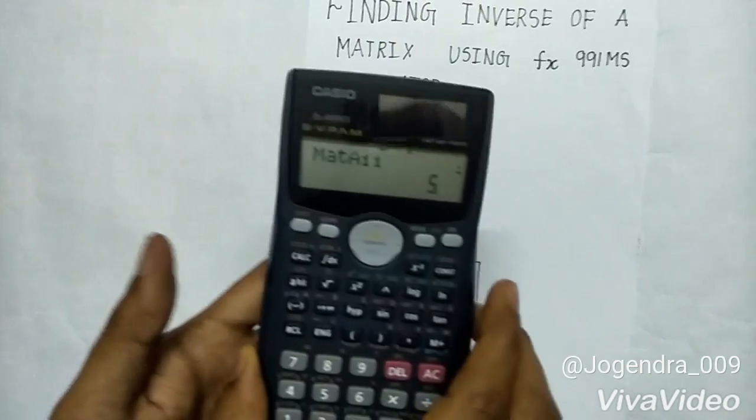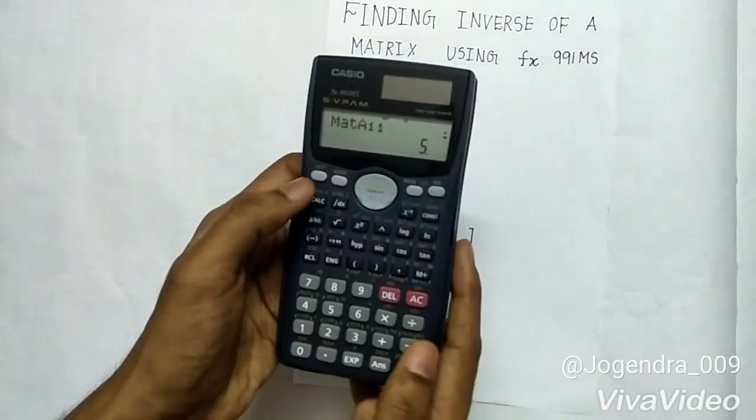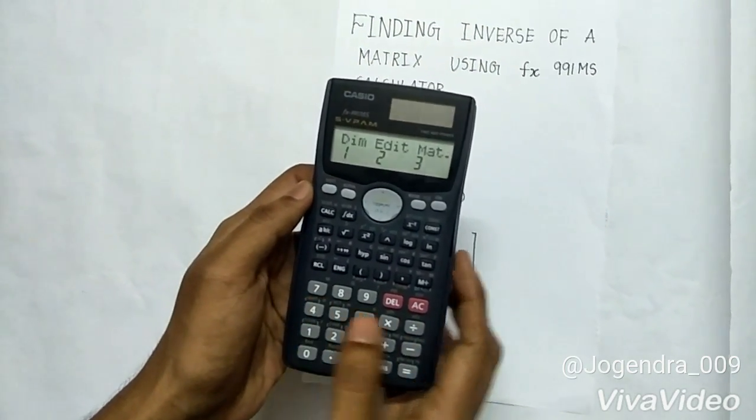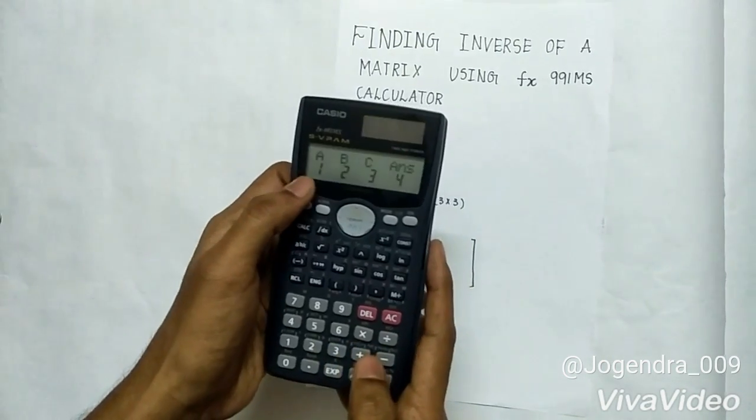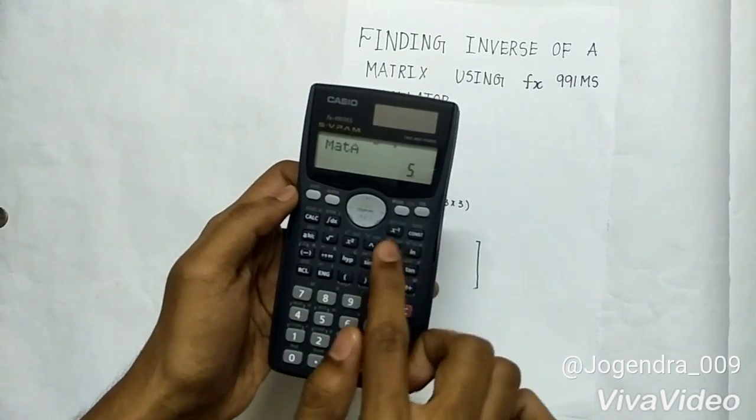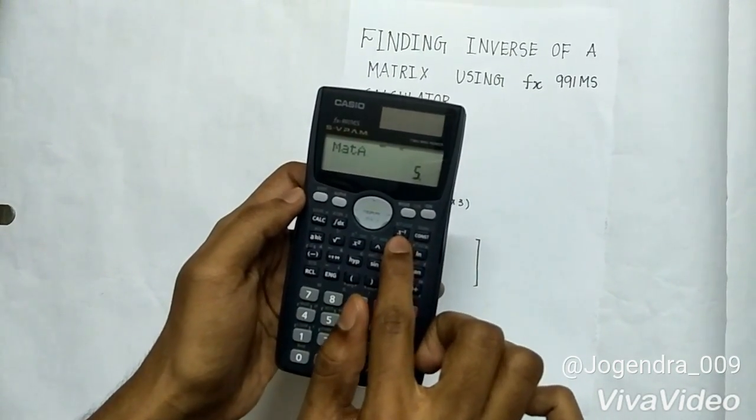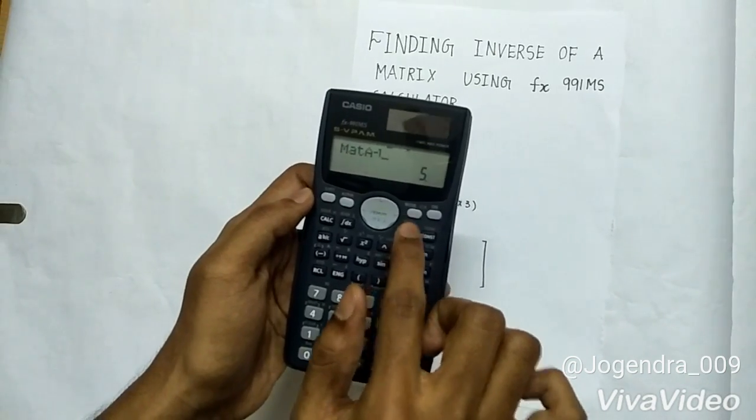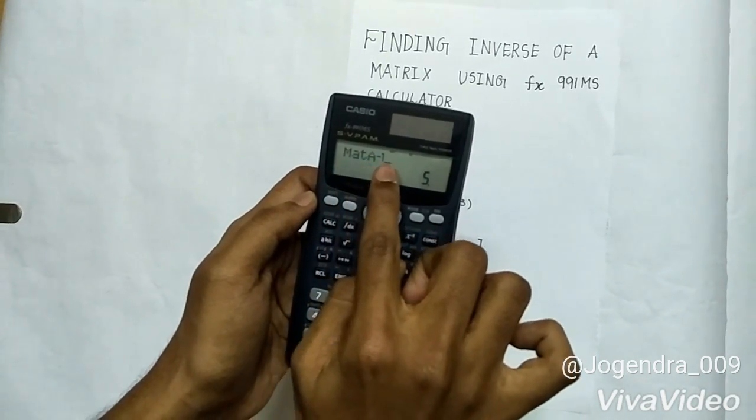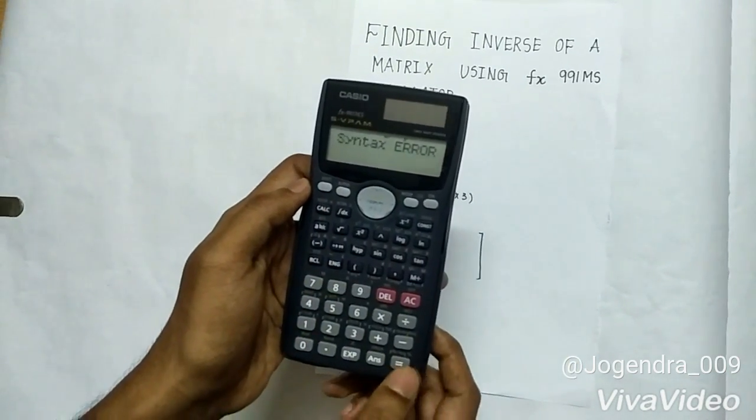Now as we have entered our elements, to find the inverse press shift 4. Select mat. Select the matrix A. Here we can find the button X inverse. Press X inverse. You can find matrix A inverse. Press equal to.